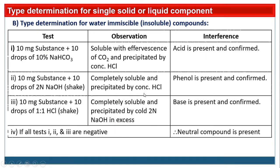If acid is absent, only then take the test for phenol. For the phenol test, take 10 mg of substance and add 10 drops of 2 normal NaOH and shake well. If the compound is completely soluble, then phenol may be present. If that soluble substance is re-precipitated by concentrated HCl, then phenol is present and confirmed.